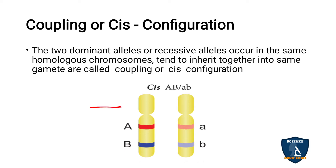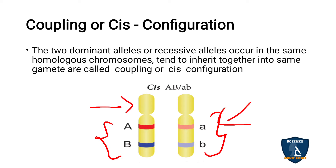Here, in a chromosome you have dominant alleles on one chromosome and recessive alleles on another chromosome. Capital A, capital B on one and small a, small b on another. When they pass the characters, they pass them as they are. So they are in couple, they are in one pair. If they are seen on the same chromosome, they will be present in the same gamete. That is called coupling or cis configuration.